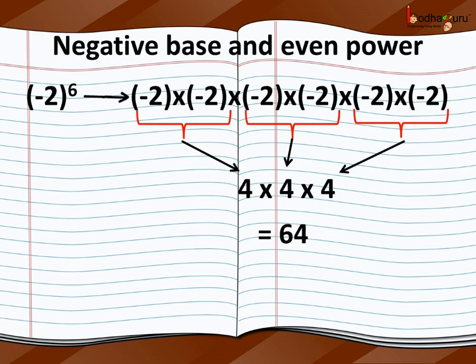Now, let us take a case where the exponent of a negative base is even. For example, minus 2 to the power 6. The multiplication can be grouped in 3 pairs, each consisting of minus 2 multiplied by minus 2, and each pair would have a positive result. Hence, the final result would also be positive.